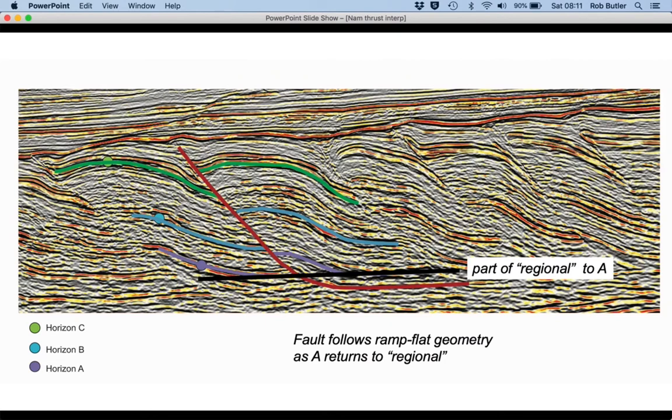There's the regional for horizon A, the mauve horizon, and we can see that where the thrust goes flat—in other words parallel to the strata—the strata are back at regional. In other words, they line up with the footwall, and the purple horizon has moved up relative to its regional, confirming the idea that the fault is a thrust.